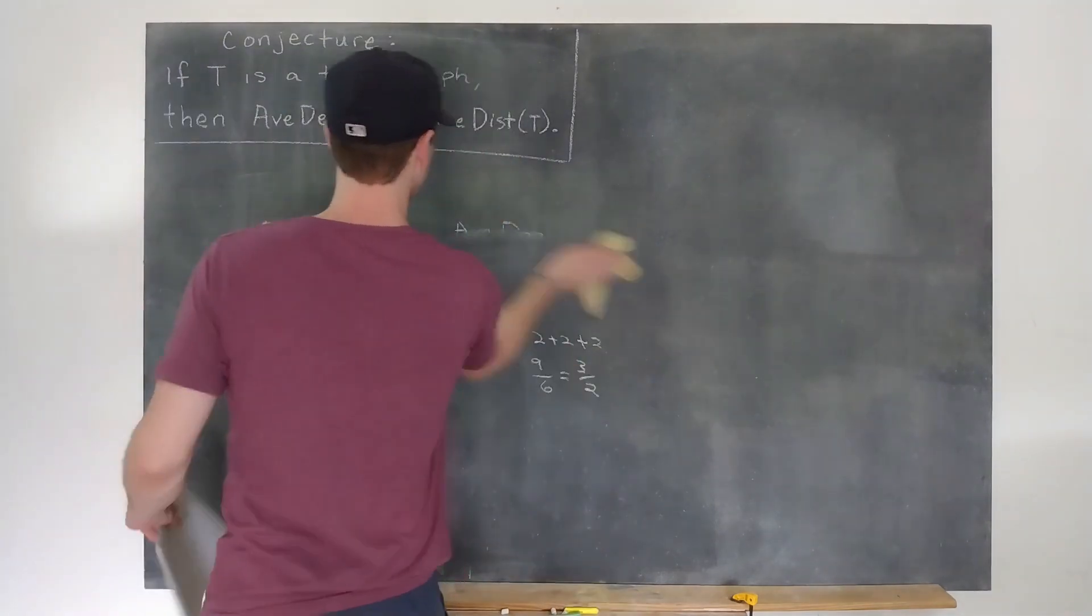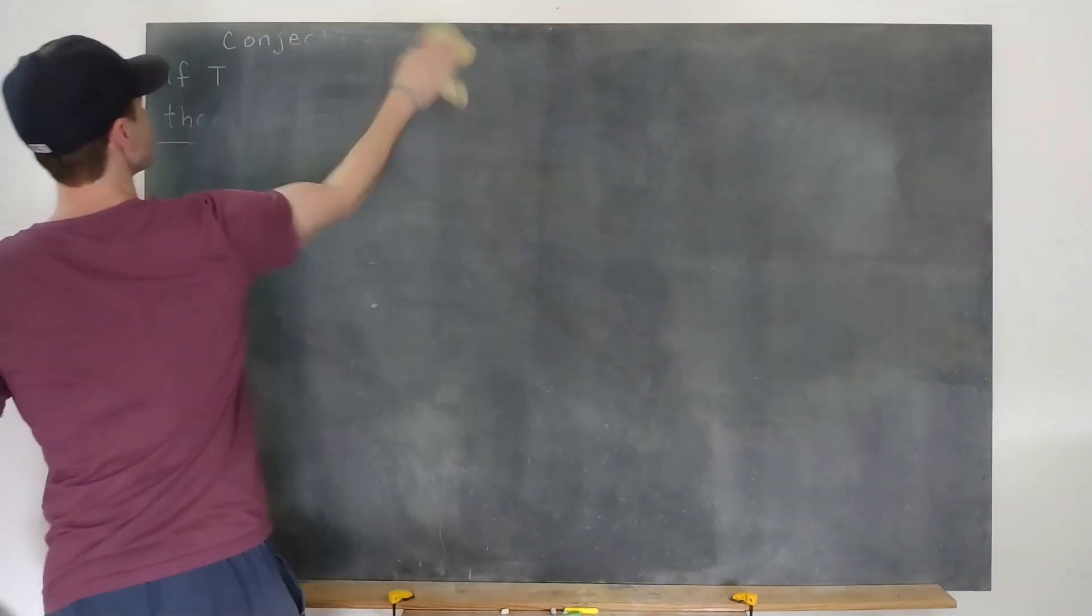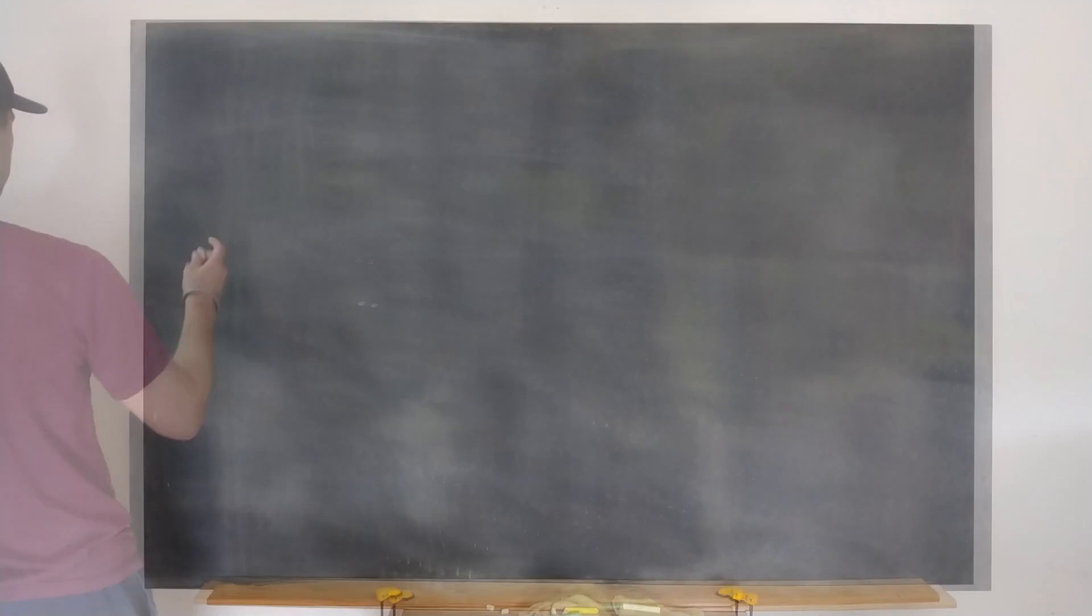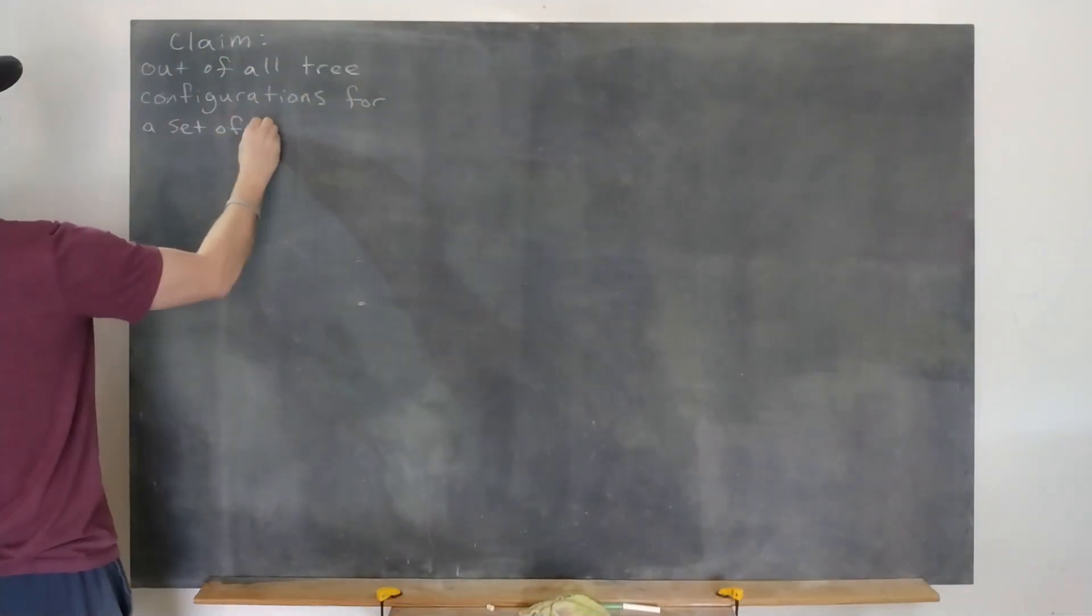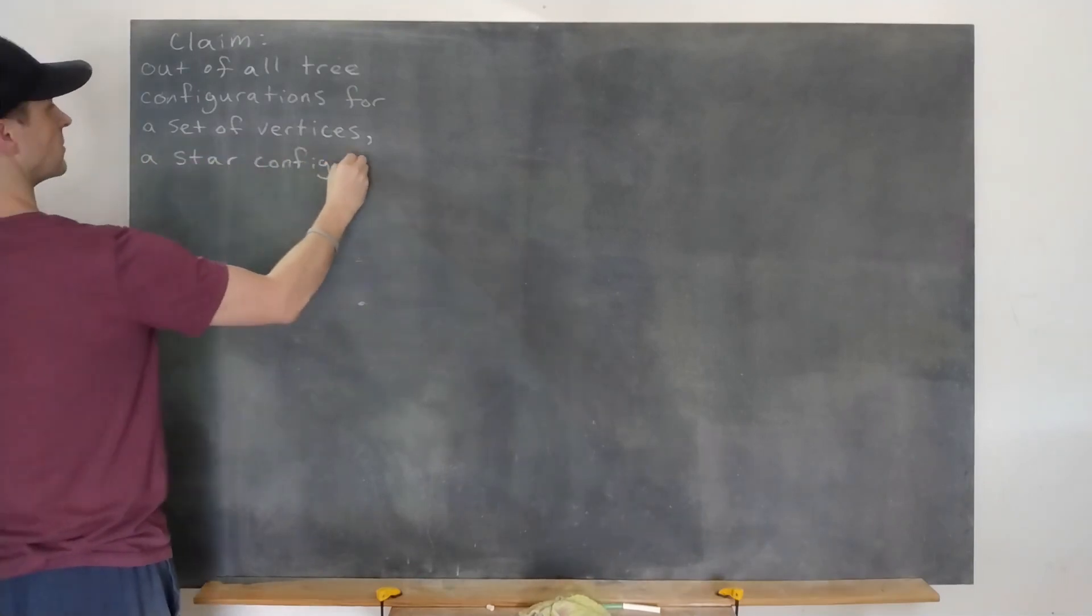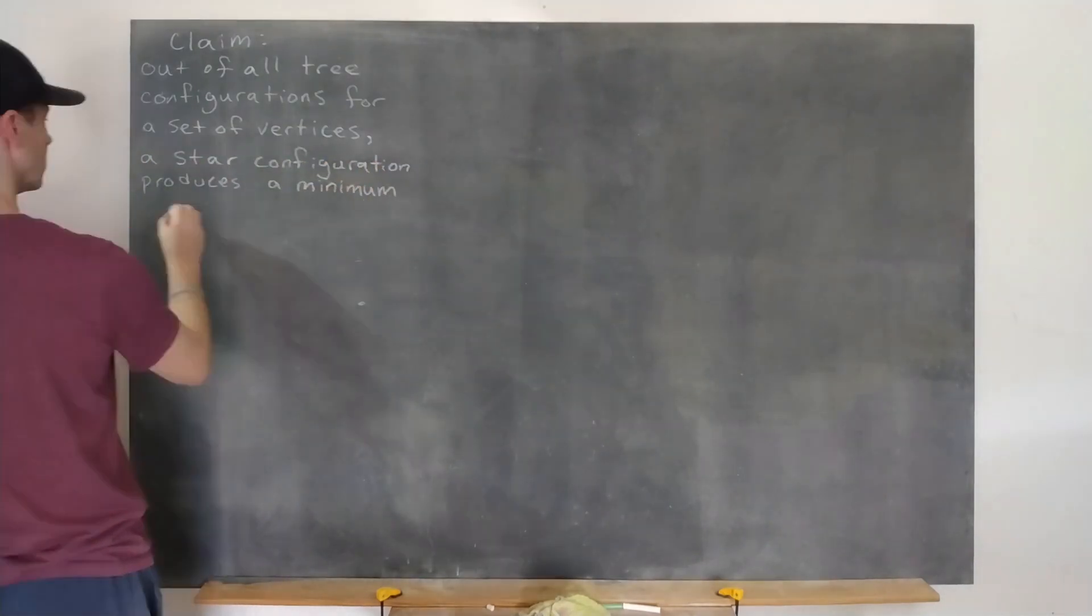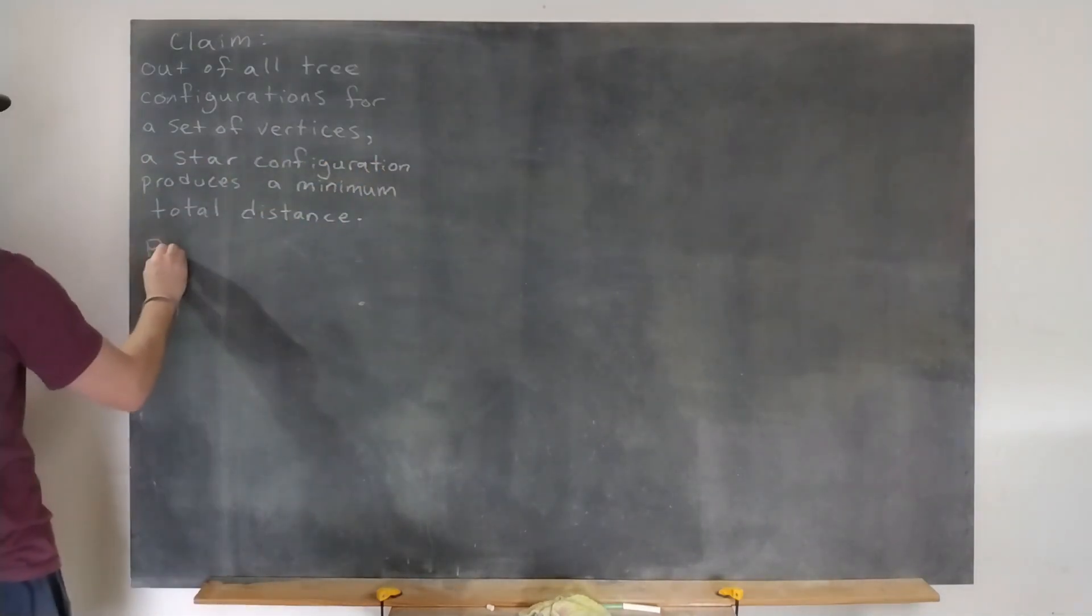Before we get to the main result though, let's prove this useful claim. Out of all tree configurations for a set of vertices, a star configuration produces a minimum total distance. Alright, why is that? Well...